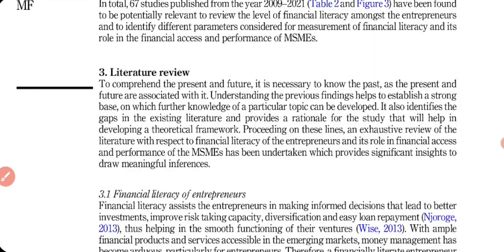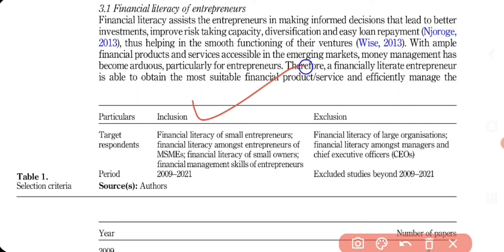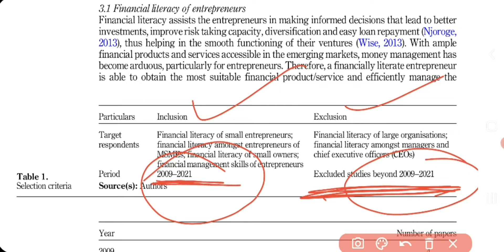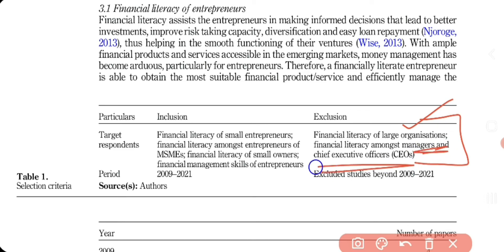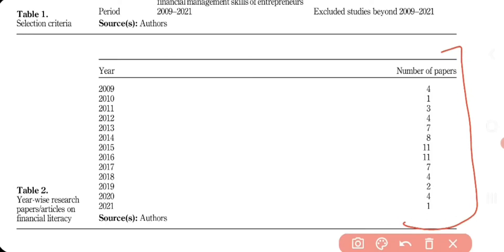The inclusion and exclusion criteria involved selecting studies from 2009 to 2021 and excluding studies outside that range. I included studies on financial literacy of small entrepreneurs, MSME owners, and their financial management skills. I excluded studies on financial literacy of large organizations and financial literacy among managers and chief executive officers.